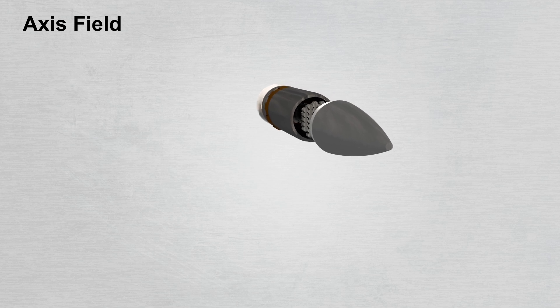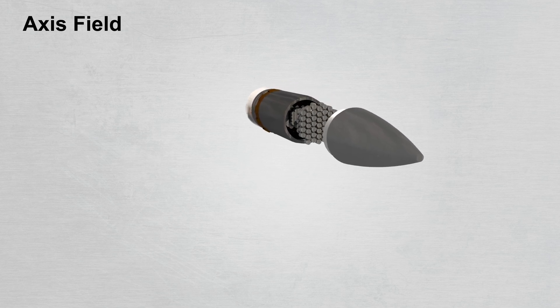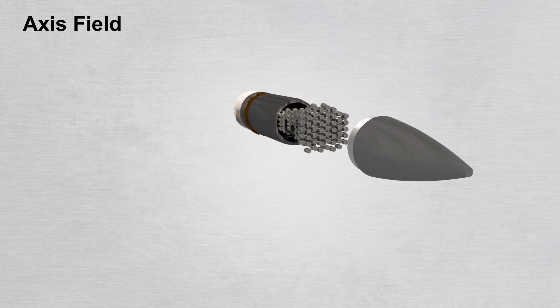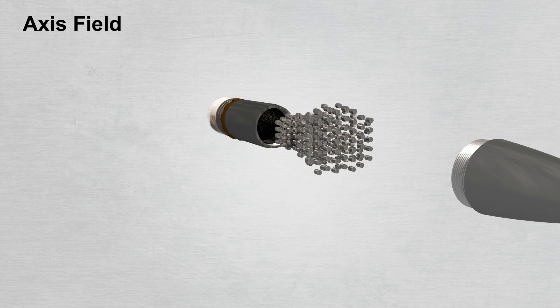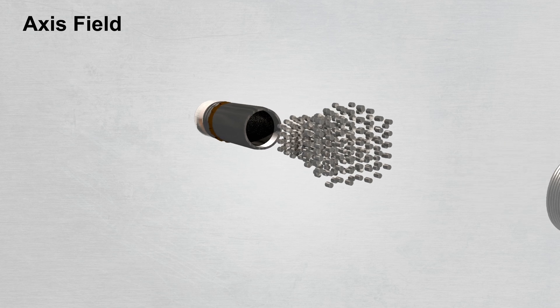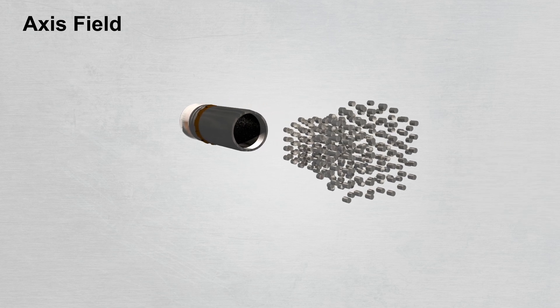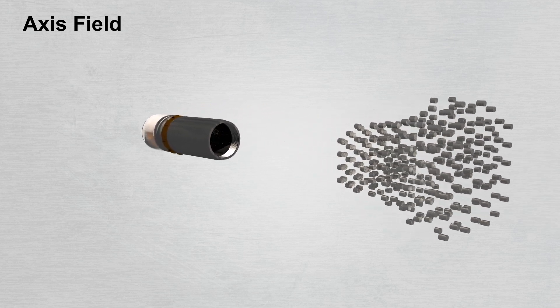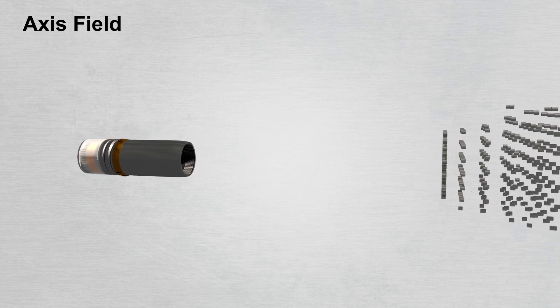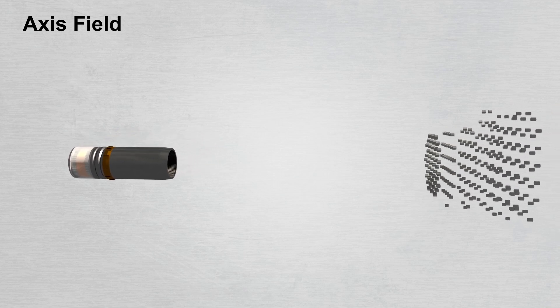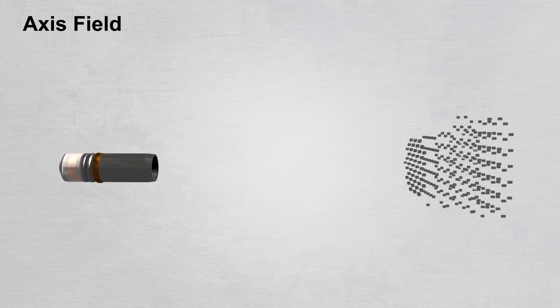A projectile with axial throwing of ready-made sub-projectiles is mainly intended to destroy aircraft, drones, manpower, and unarmored vehicles. The throwing of sub-projectiles is carried out due to an expelling charge located in the fuse.